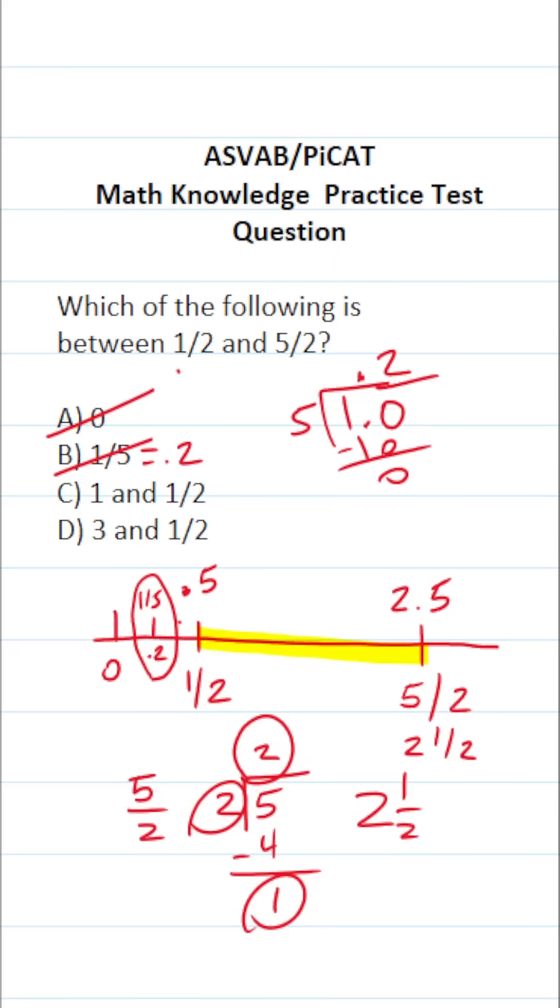What about 3 and 1/2? 3 and 1/2 is the same thing as 3.5. That's clearly bigger than 2.5, so it's not between those two numbers. 1 and 1/2 is the same thing as 1.5. It is, in fact, between these two numbers. So the answer to this one is C.